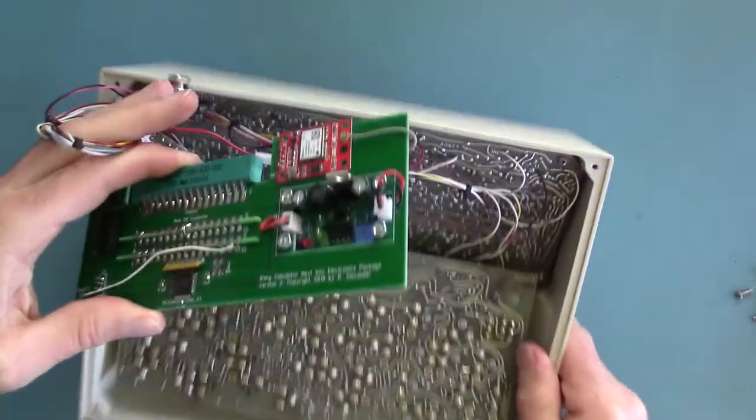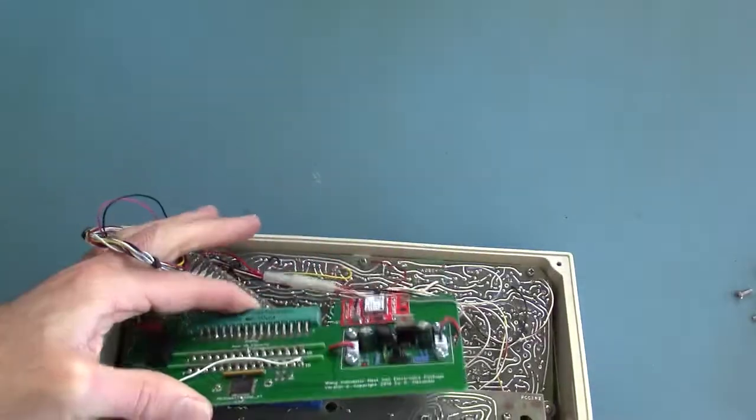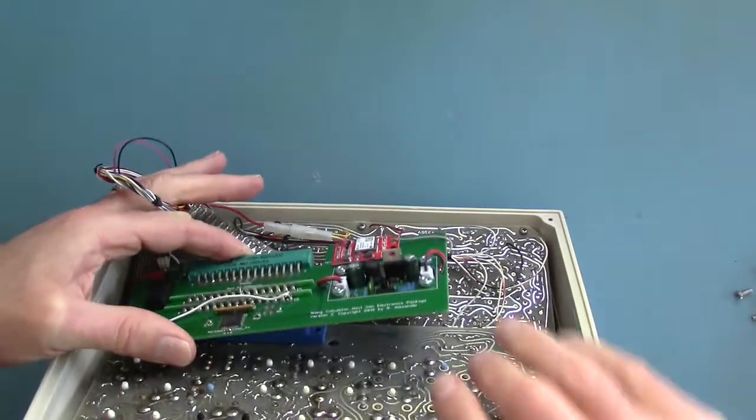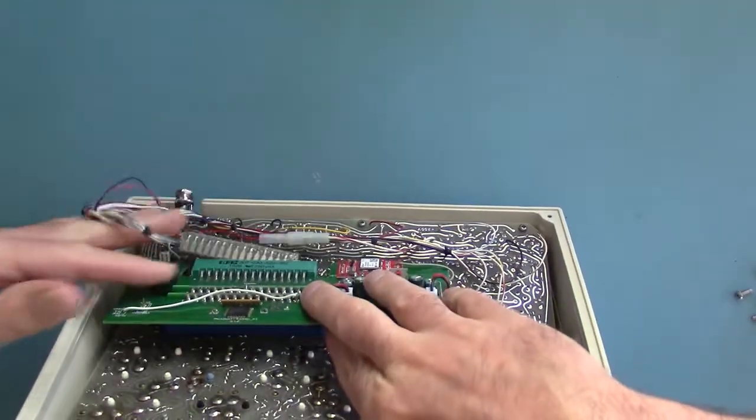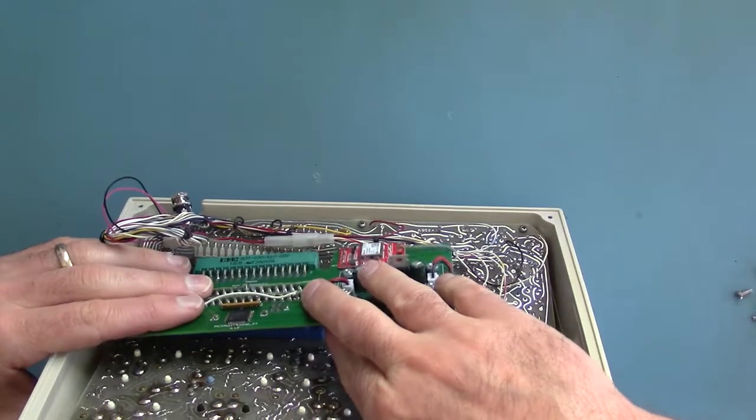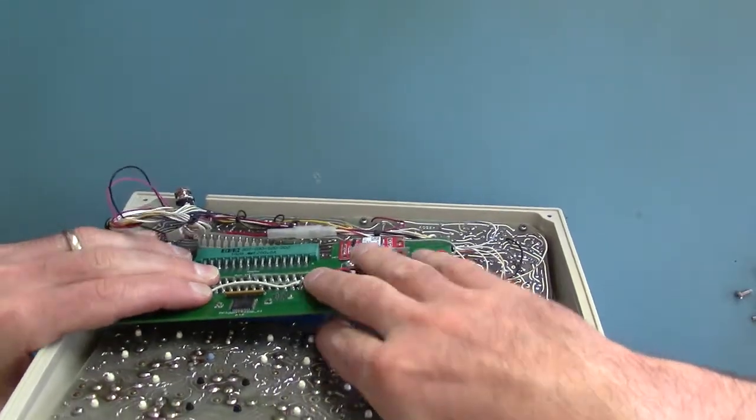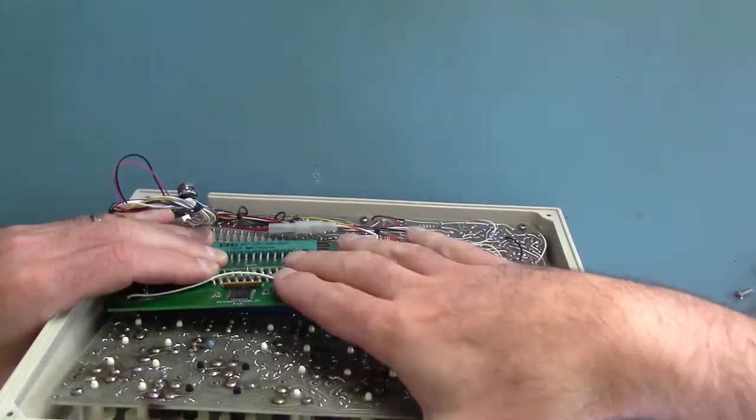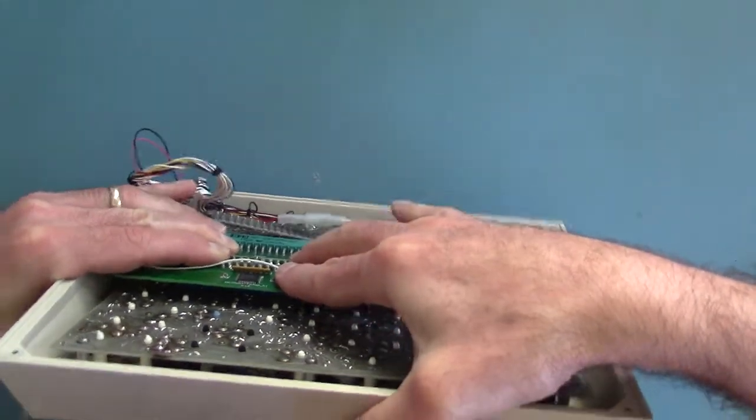I showed in my previous video how to install the modern electronic package board, but here's a helpful trick. It can be tough to line up the edge cards so that they go all the way into the slots. So what you can do is push in one side, then shove the board over so that it butts up against the end of the slot, then press in the other side.